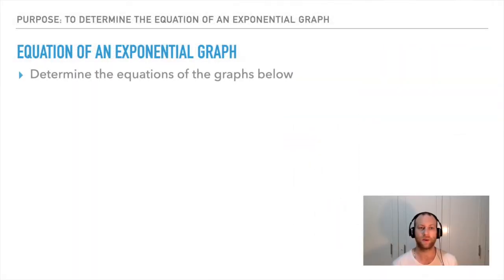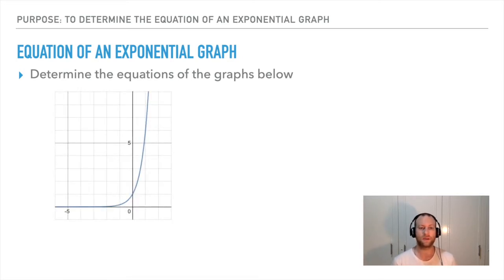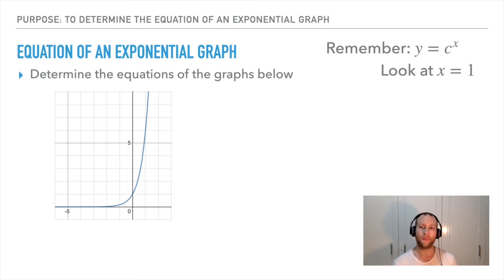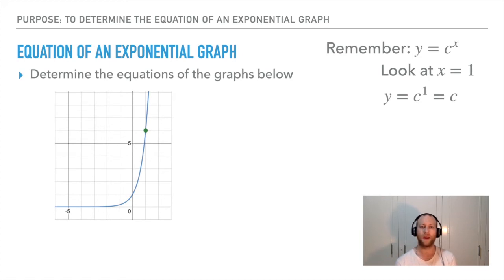Now let's determine the equation from a graph. The key is that y equals c to the power of x. We need to find c, the base. If we plug in x equals one, we get y equals c to the power of one, which equals c. So look at the graph where x equals one and read off the y value — that y value is the base. On this growth graph, at x equals one, y equals six. Therefore the equation is y equals six to the power of x.